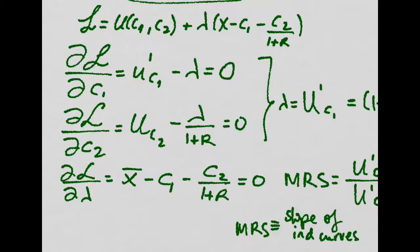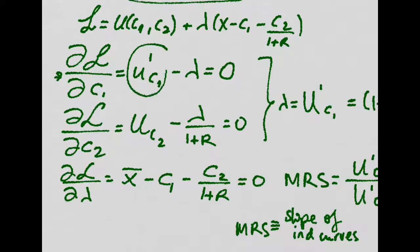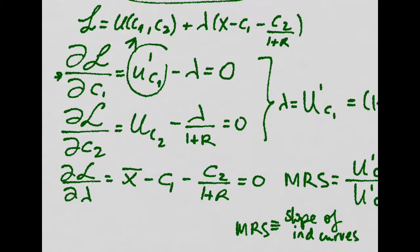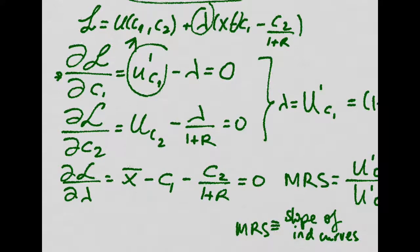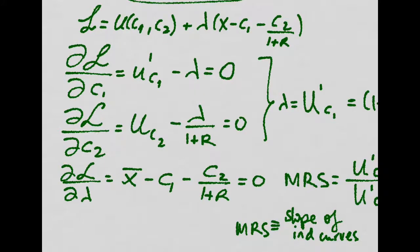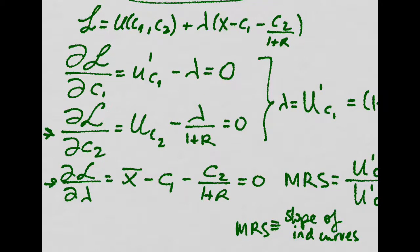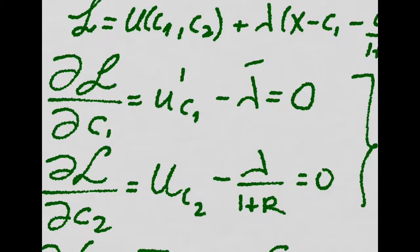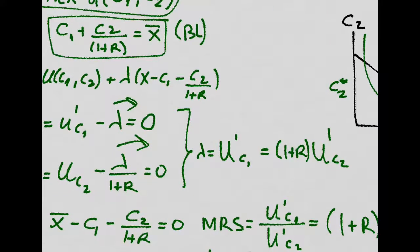We place it there, and that's that. So the derivative of the Lagrangian with respect to C1 is just going to be the utility, the marginal utility with respect to C1 minus this lambda. And that will all be equal to 0. And we do the same for C2 and for lambda. So now we just solve for lambda in these two expressions. And we get this.